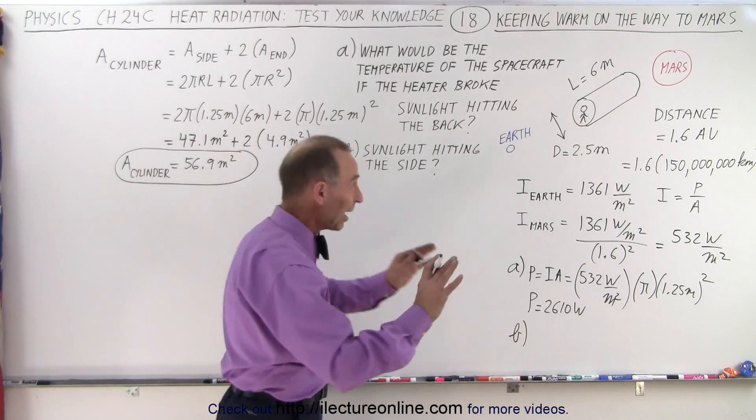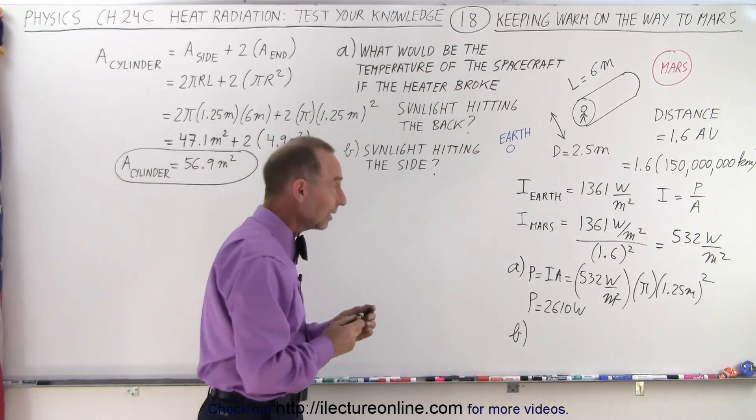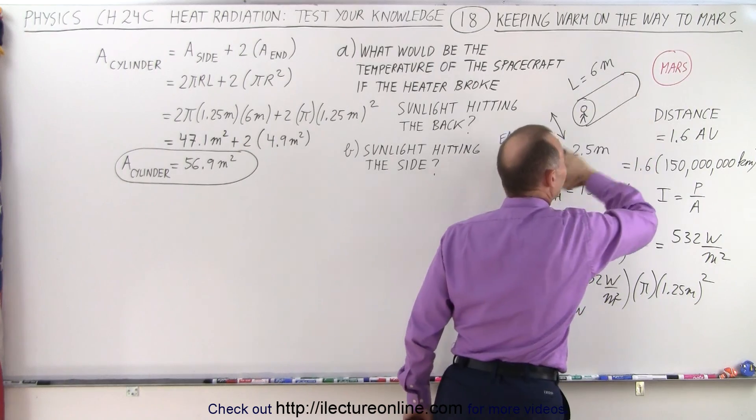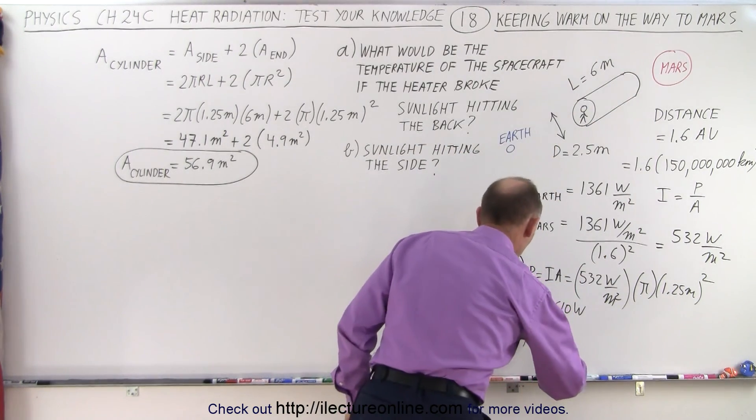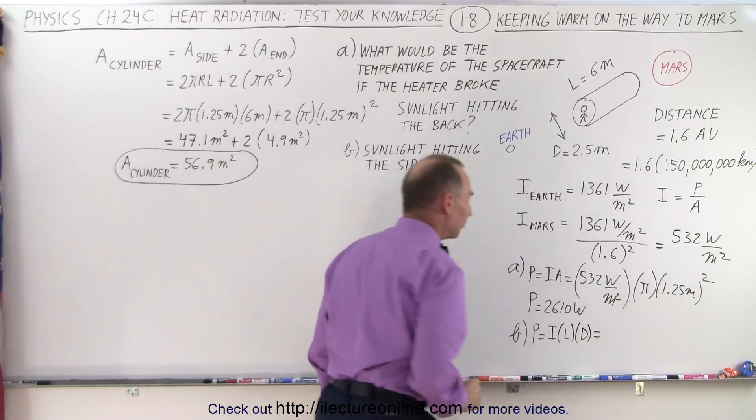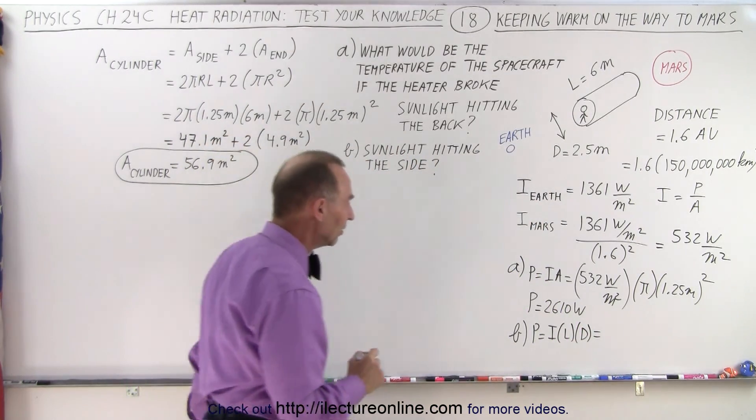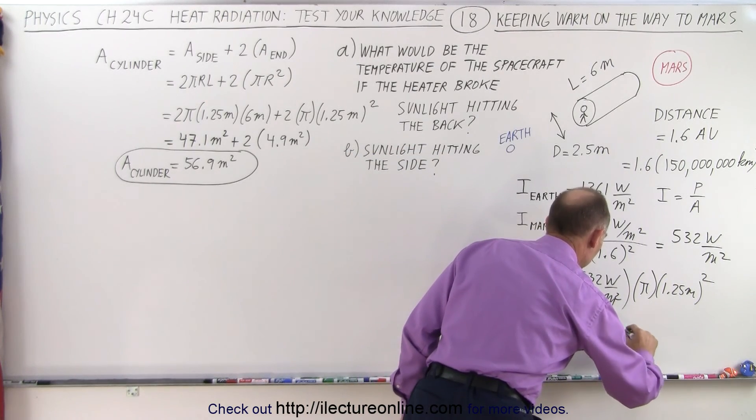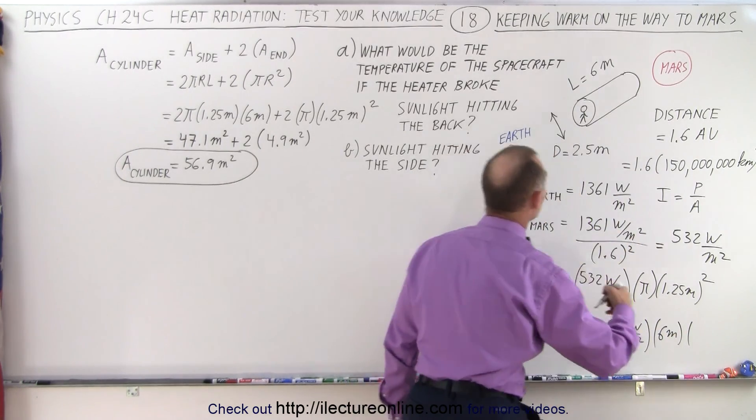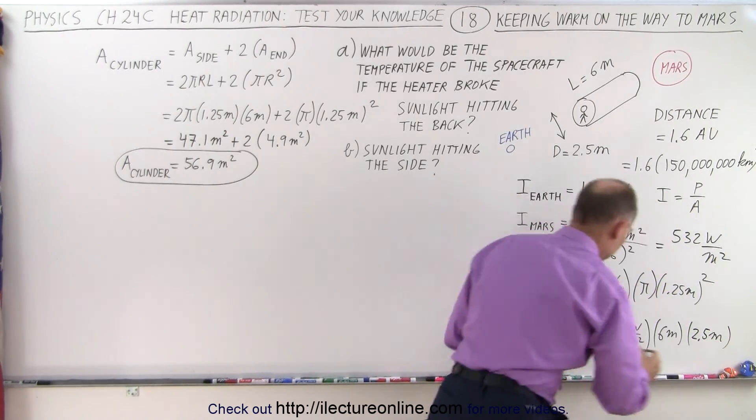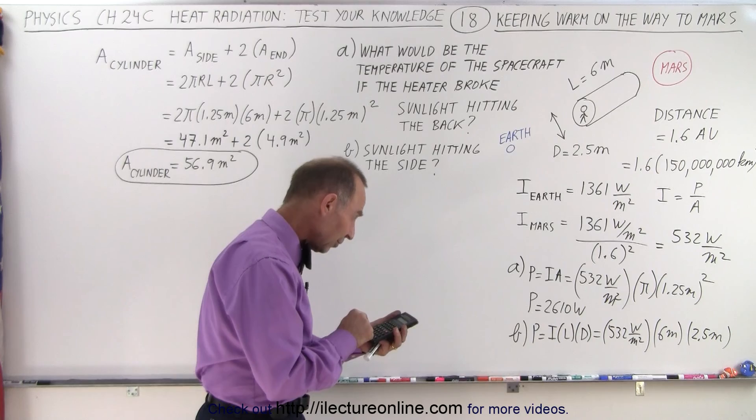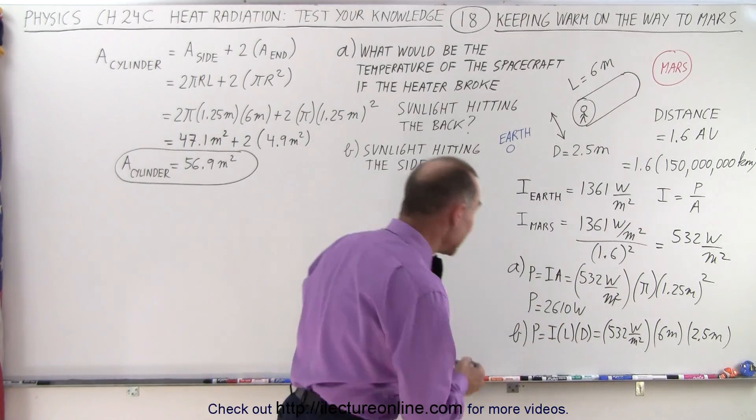Now for Part B, when they turn the spacecraft around and now the whole side of the spacecraft is receiving sunlight, then the area that would receive it, because we have to take into account that it's curved, it would be what the surface area would look like if we had a cross-sectional area. So in this case, power would be intensity times the length times the diameter of the spacecraft. So that would be the effective area that would receive sunlight. So in this case, that would be 532 watts per square meter times the length, which is 6 meters, and times the diameter, in this case would be 2.5 meters. And let's see what that's equal to. So 532 times 6 times 2.5, that gives 7,980 watts.